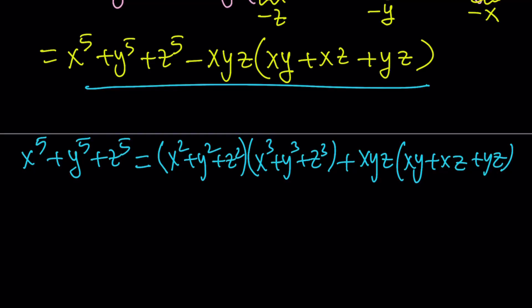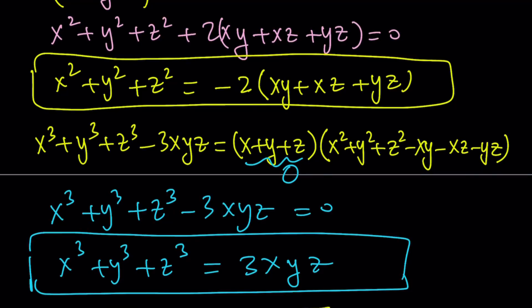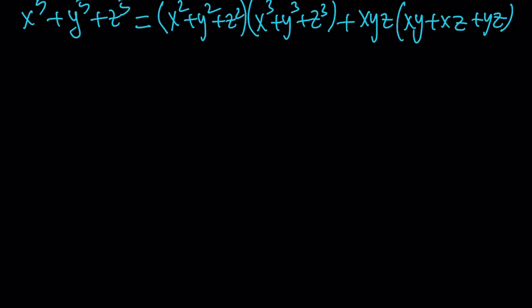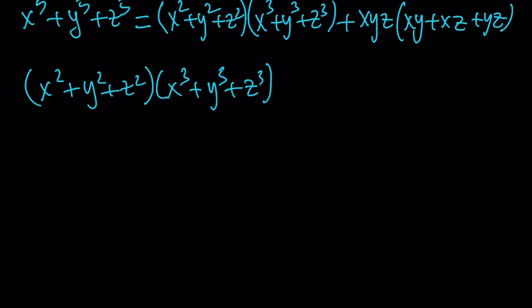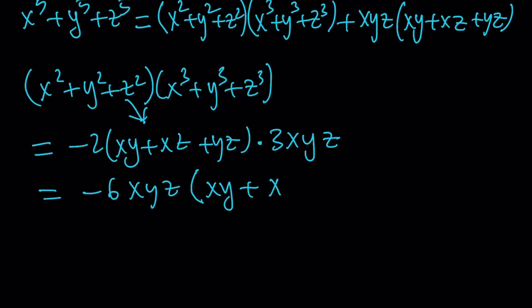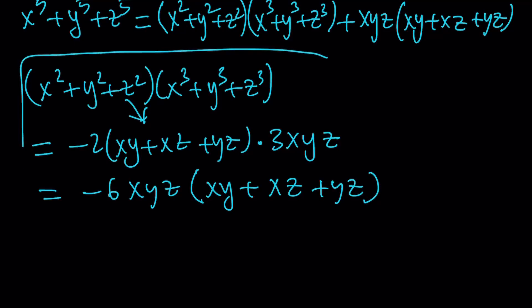Let's first find the product of the sum of squares and sum of cubes. x squared plus y squared plus z squared equals negative 2 times (xy plus xz plus yz), and the sum of cubes equals 3xyz. So their product is negative 6xyz times (xy plus xz plus yz). That is what the product of the sum of squares and sum of cubes equals.